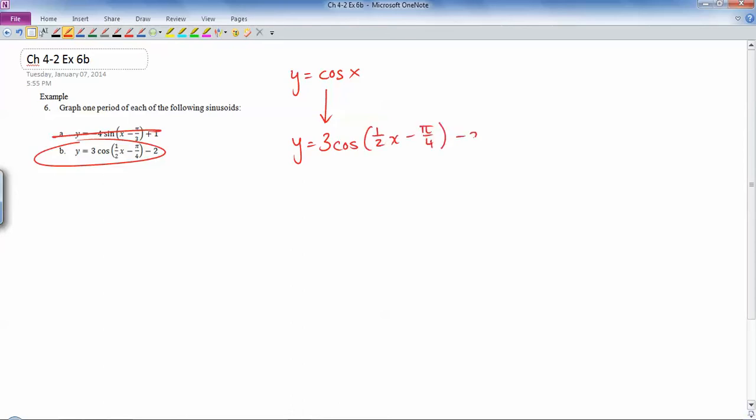And so the way that we want to approach this is we want to use that general point method that we've been using in class. So the general point for the parent function is (a, cos a), and that's going to turn into something else, and from that we can figure out what the transformations are.